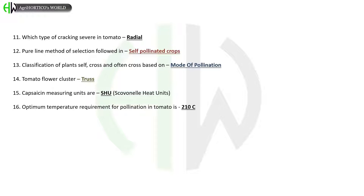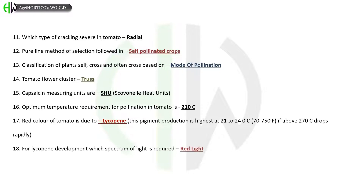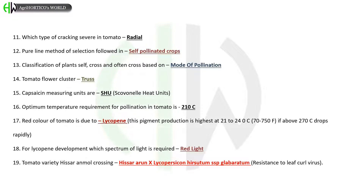Optimum temperature requirement for pollination in tomato is 21 degrees Celsius. Red color of tomato is due to lycopene. This pigment production is highest at 21–24 degrees C (70–75°F); if above 27 degrees C, it drops rapidly. For lycopene development, red spectrum of light is required. Tomato variety Hissar arun × Lycopersicon hirsutum ssp. glabratum shows resistance to leaf curl virus. From India, cherry tomatoes are exported to European countries.